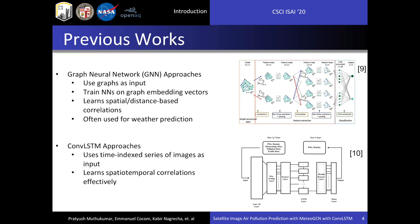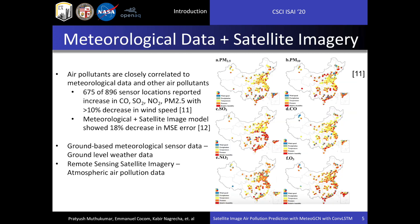Other approaches use ConvLSTMs to predict spatiotemporal air pollution, using videos or time-indexed series of images as input. However, there is little research on machine learning models that predict spatiotemporal air pollution using both meteorological data and satellite imagery. Meteorological data certainly has an impact on the ability to forecast air pollution. Liu et al. found that air pollutants are highly correlated to other air pollutants and meteorological features like wind speed, wind direction, precipitation, and temperature.